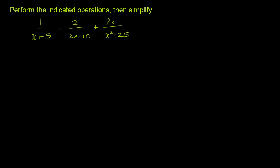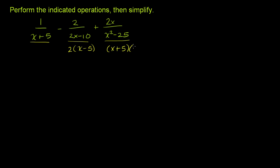To figure out a common denominator, we have to figure out the least common multiple of x plus 5, of 2x minus 10, and x squared minus 25. To find the least common multiple, we want to factor these out. x plus 5 can't be factored anymore. 2x minus 10, we can factor out a 2, and it becomes 2 times x minus 5. And x squared minus 25 you might recognize as a difference of squares, so that's x plus 5 times x minus 5.